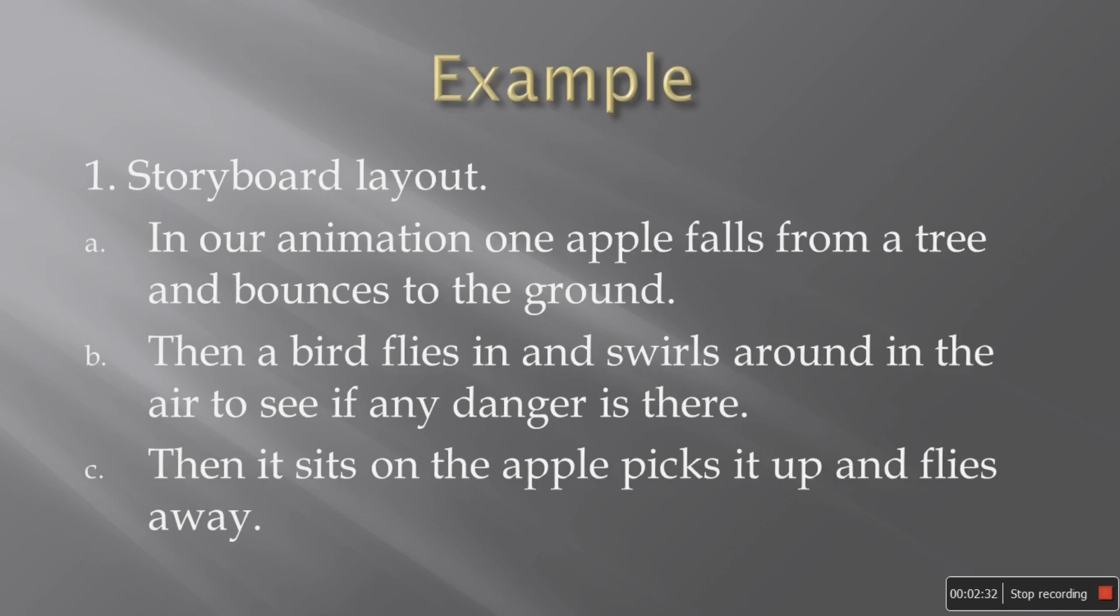Now we'll take a look at an example. So in our example, first we'll write the first step, that is storyboard layout. So we'll write down what happens in our animation. So let's say in our animation, one apple falls from the tree and it bounces to the ground. Then a bird flies in and swirls around to see if any danger is there. Then it sits on the apple, picks it up and flies away. So this is a simple example that we are going to create. So this is the storyboard layout. What happens in the animation? That is the sequence of events.